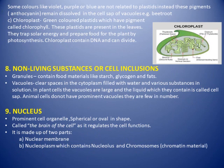Colors like violet, purple, and blue are not related to plastids. Instead, the pigment anthocyanin remains dissolved in the cell sap of the vacuoles — for example, the purplish color of beetroot comes from anthocyanin present in the vacuoles, not in chromoplasts.